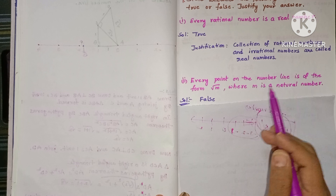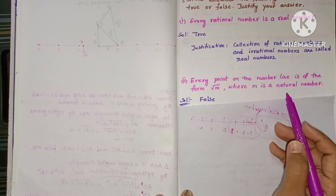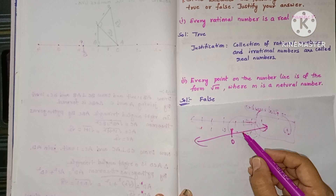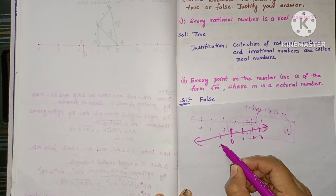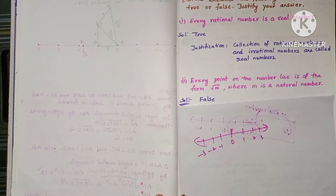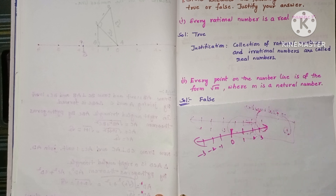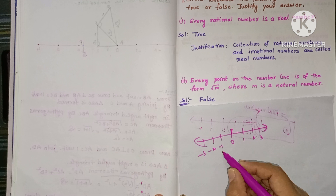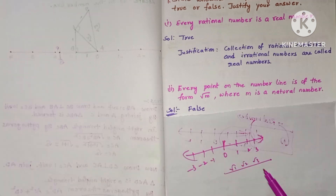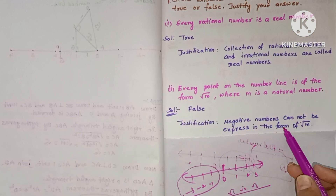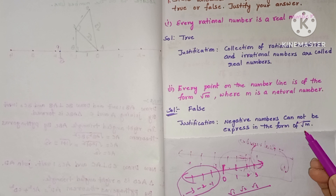Second question: every point on the number line is of the form √m, where m is a natural number. On the number line, zero is in the middle, positive numbers on the right, and negative numbers on the left. √1, √2, √3 correspond to natural numbers, but negative numbers cannot be expressed as √m. So the answer is FALSE. Justification: negative numbers cannot be expressed in the form √m.